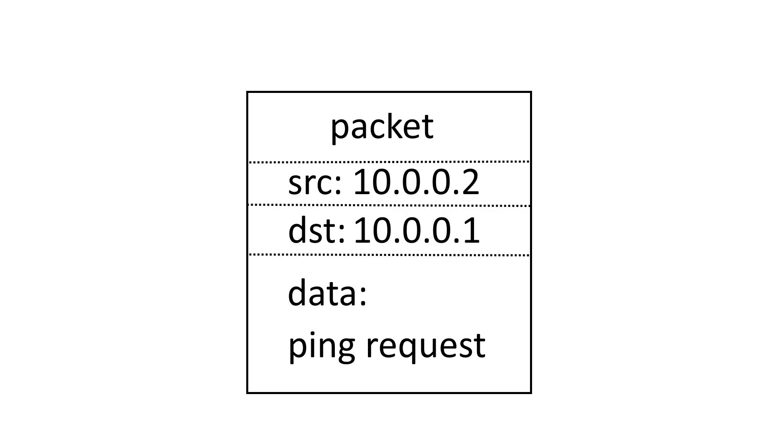This is where the MAC address of the NIC comes in. In order for a ping to actually get from a packet in memory out into the network and back up the other side again, it needs to be encapsulated in an Ethernet frame. The entire packet becomes the data component of an Ethernet frame. The Ethernet frame, similarly, has a source MAC address, a destination MAC address, and the payload, which is the entire other packet.